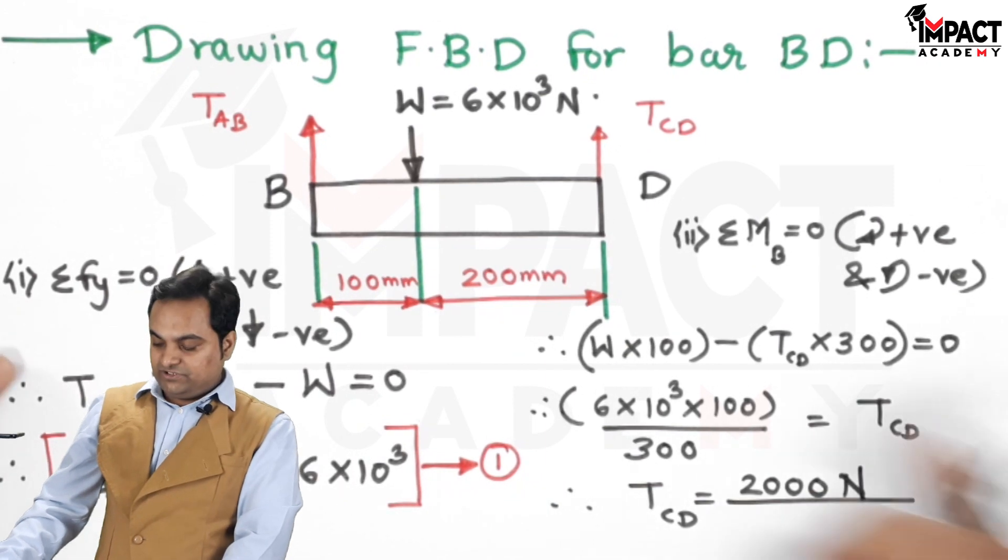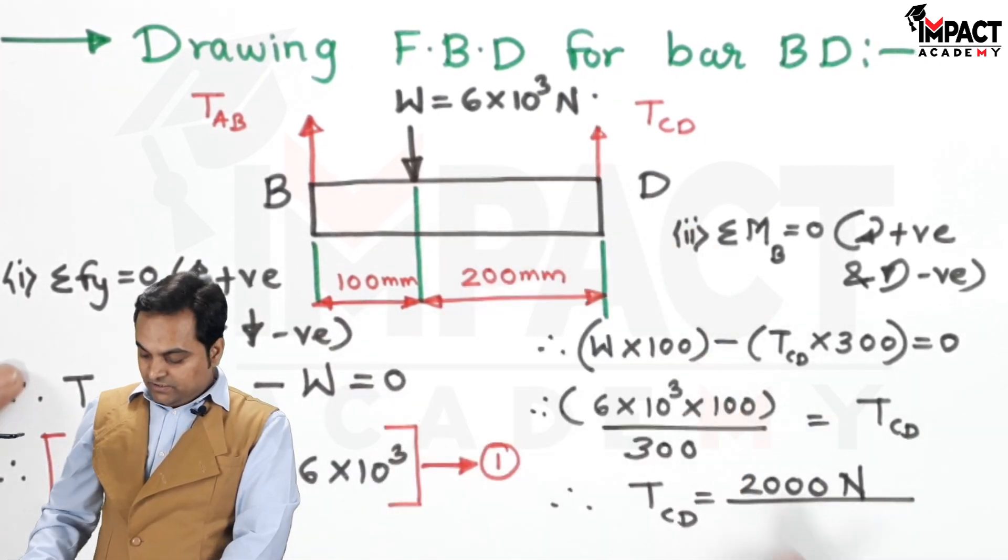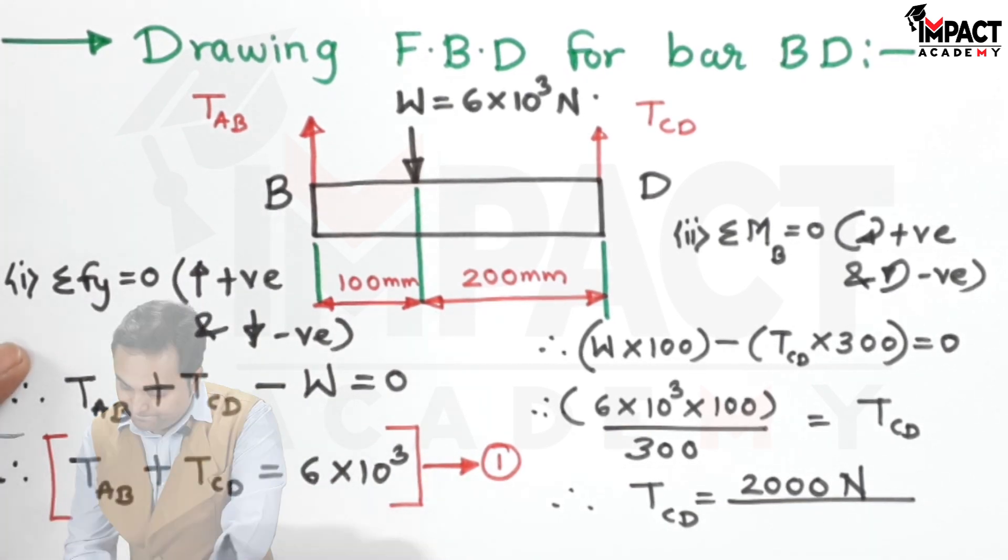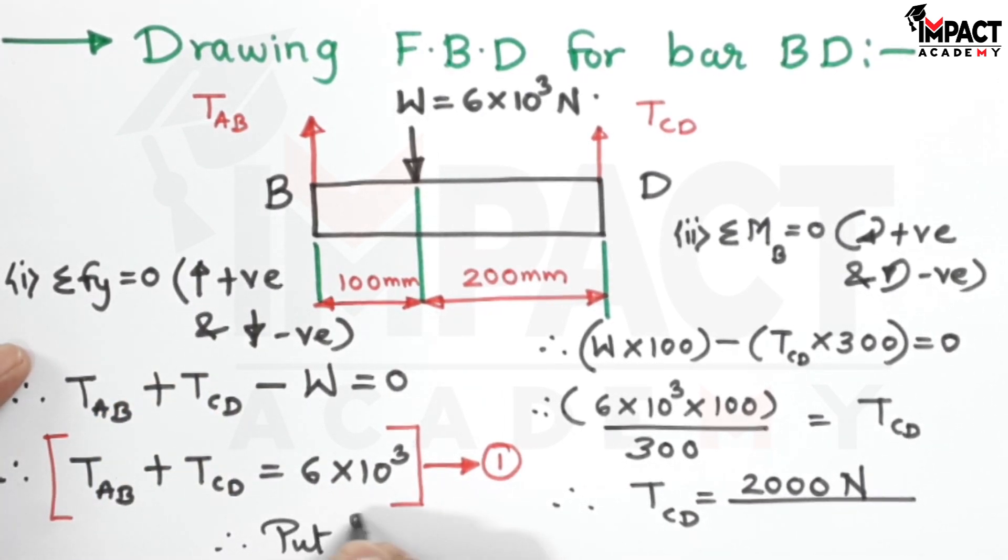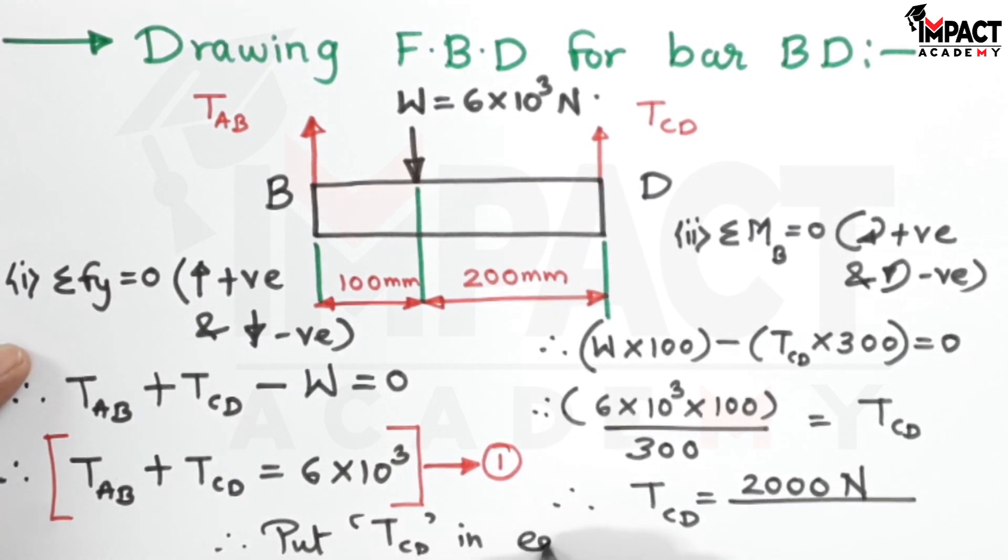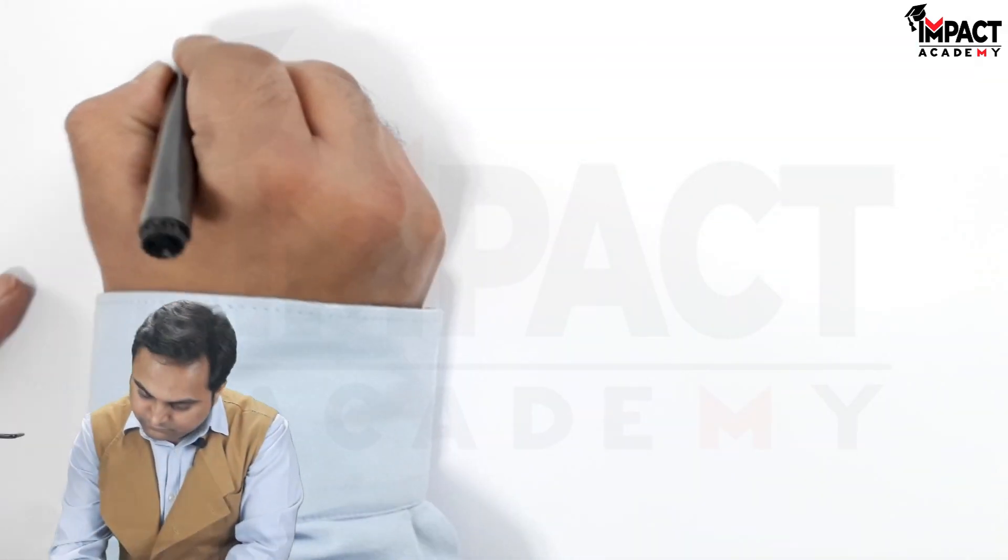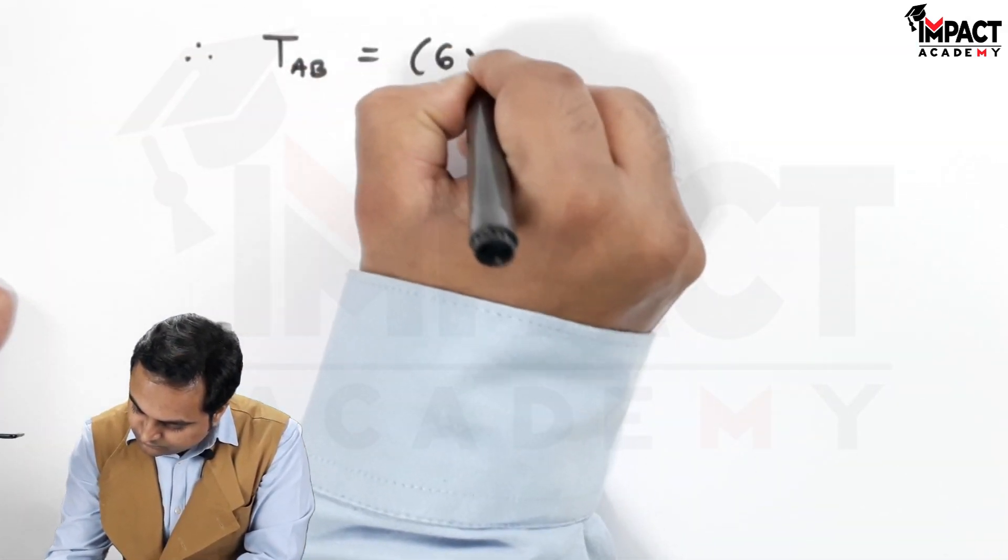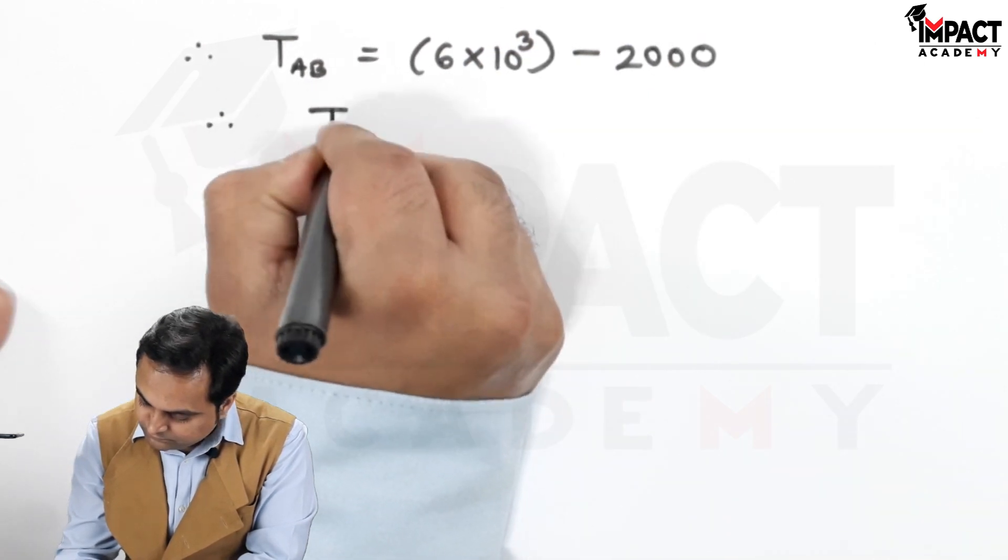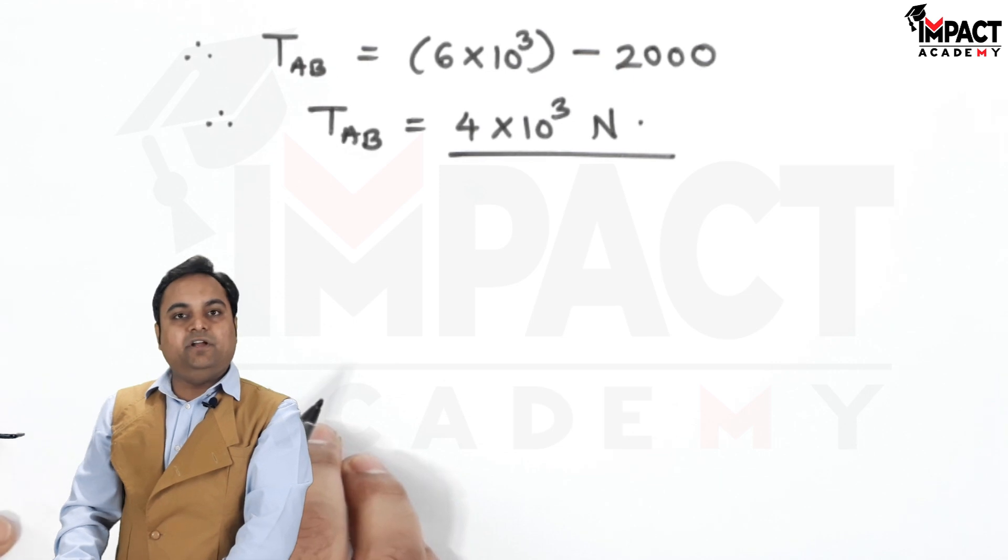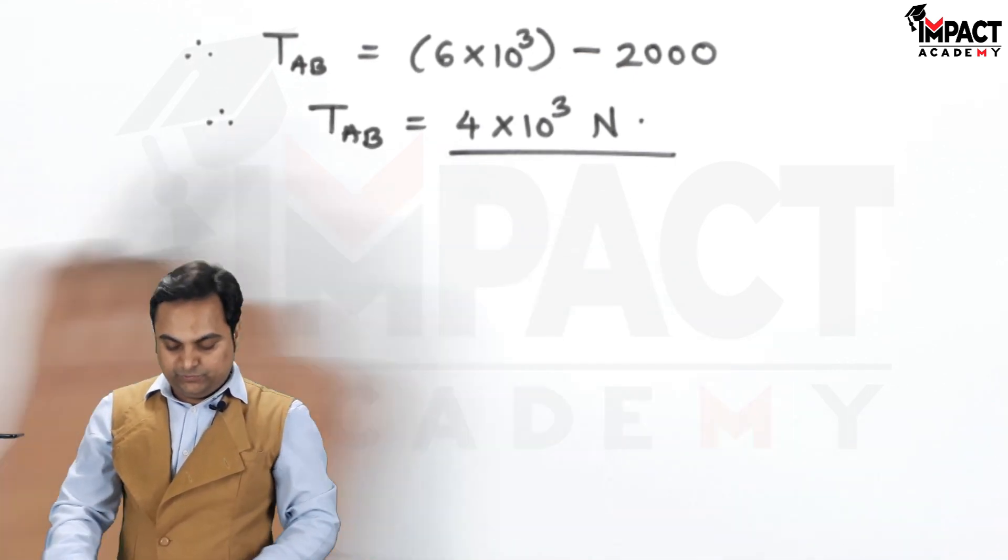So I have calculated how much is the force in string CD. Similarly, I will put this TCD value in equation number 1. Therefore, put T suffix CD in equation 1. So we can get TAB that would be 6 into 10 raise to 3 minus 2000. So tension in wire AB comes out to be 4 into 10 raise to 3 Newton.